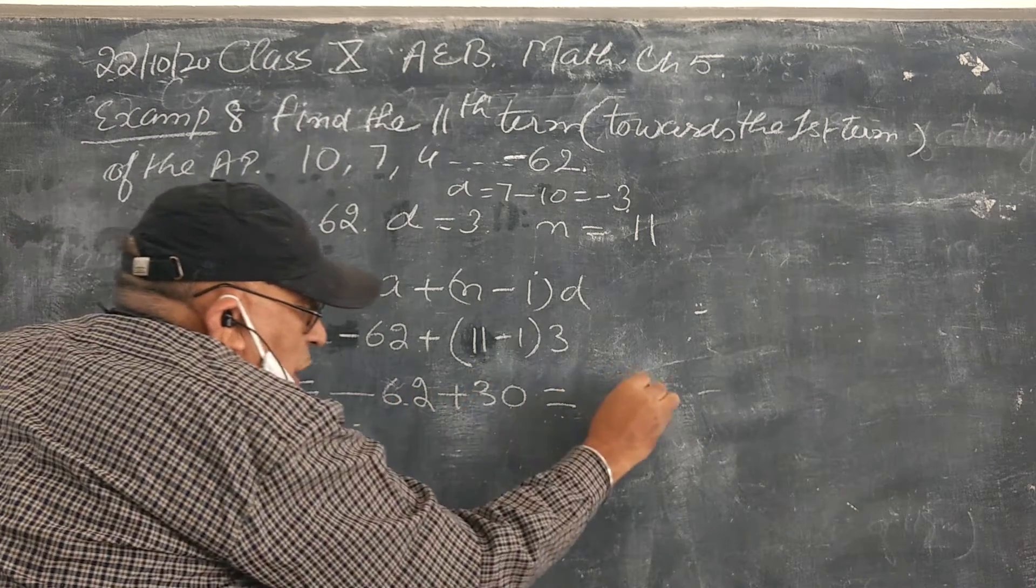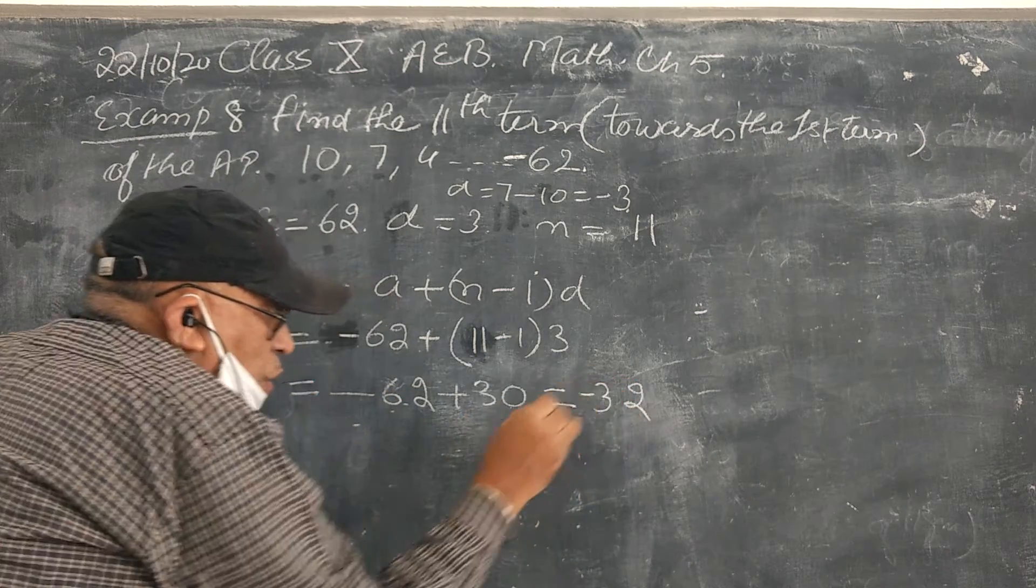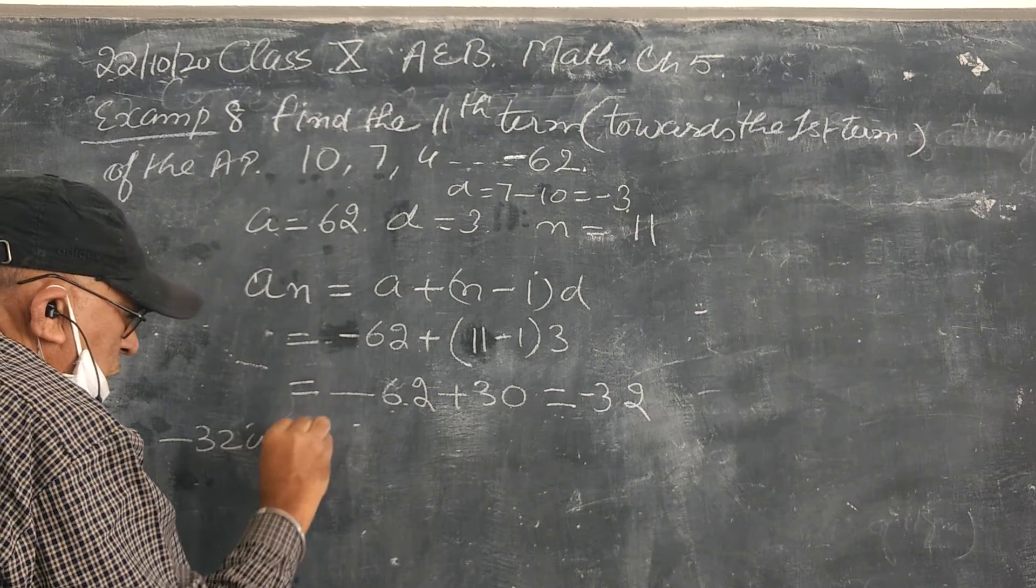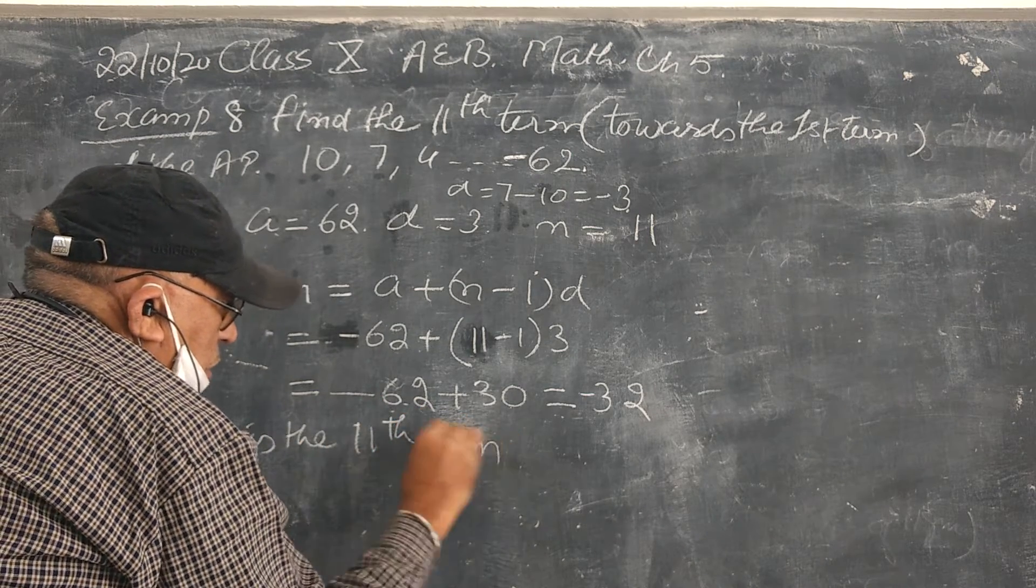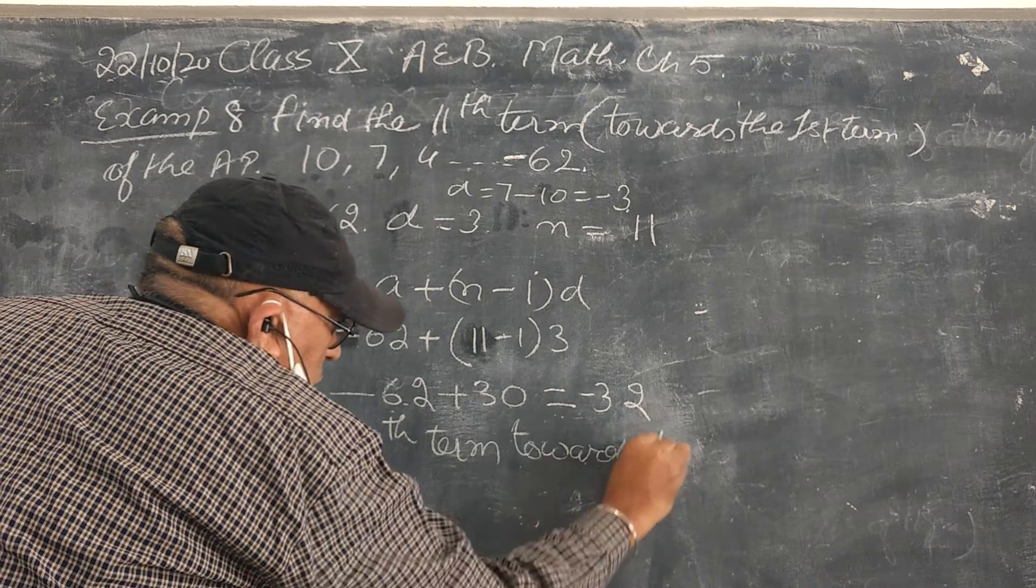So 2 measures 0, 2, or 6 measures 3, so minus 32. This is the 11th term, the 14th term.